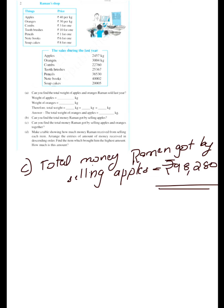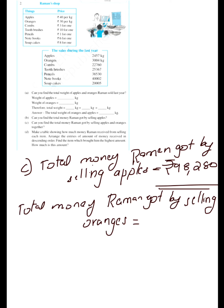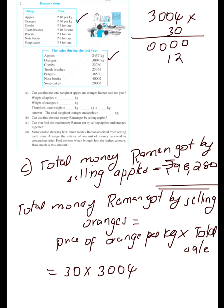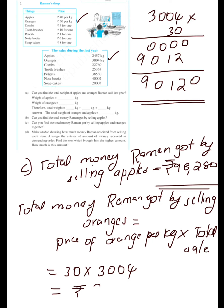Now find the total money Ramen got by selling oranges. Multiply the price of orange per kg into total sale of oranges last year. Price of orange per kg is 30, and total sale of oranges is 3004 kg. Computing 30 × 3004: 0, 0, 0, 0, 12, 0, 0, 9 — the answer is 90,120 rupees.